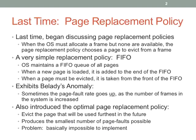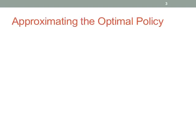We started talking about other policies. The best one that could possibly exist is called optimal — we evict the page furthest used in the future. Because if it's the furthest used in the future, every other page in memory is needed sooner than the one we decide to evict. This reduces page faults to a minimum. The problem is it's impossible to implement because you have to predict the future.